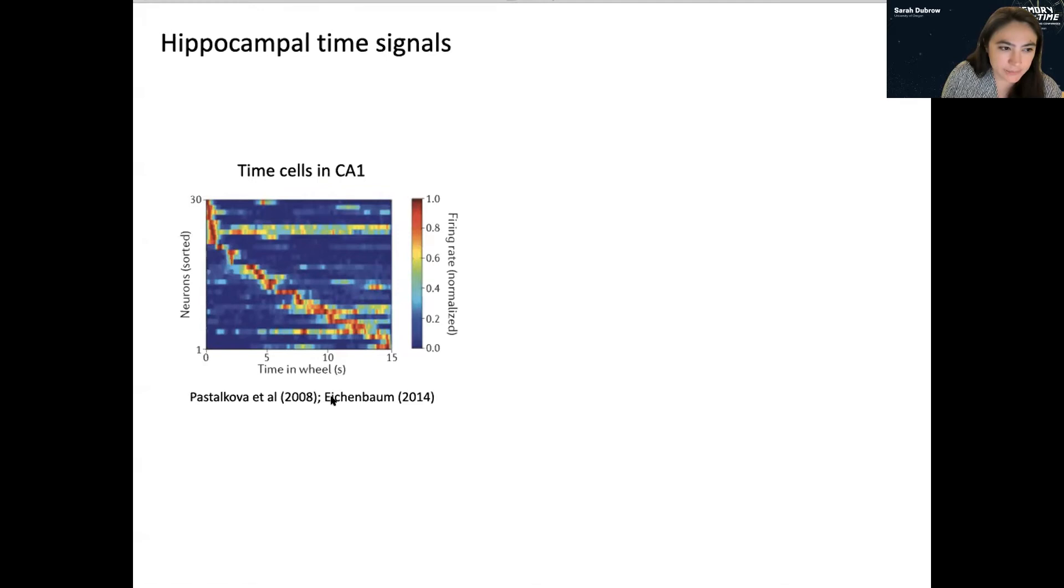And basically, the idea is that there are cells that fire at particular moments in time from a stimulus during a delay period that can give you a good readout of when that event occurred. But generally speaking, these timescales are relatively short, so on the order of several seconds to maybe tens of seconds. So it's not completely clear how this would scale up to support memory on the order of weeks or months.